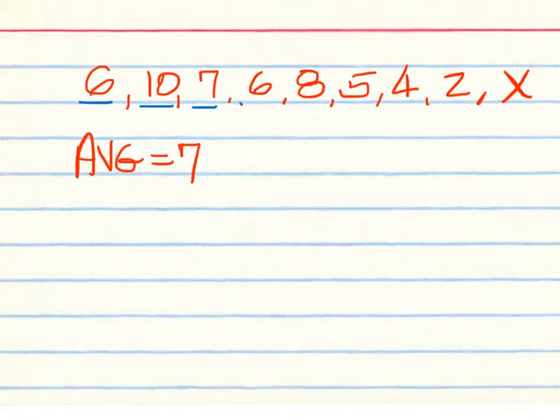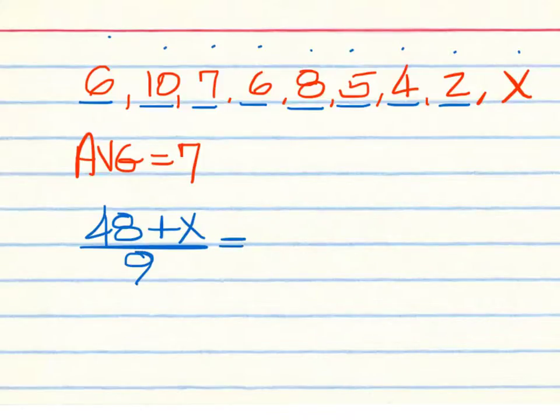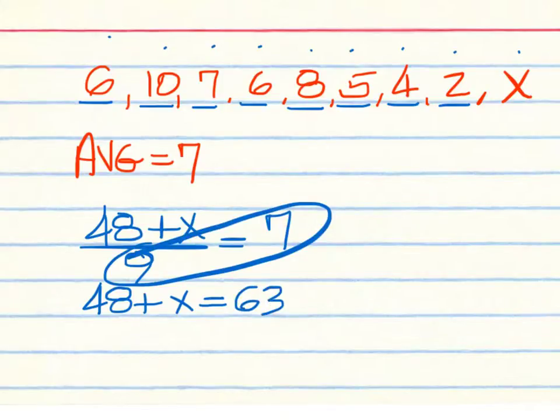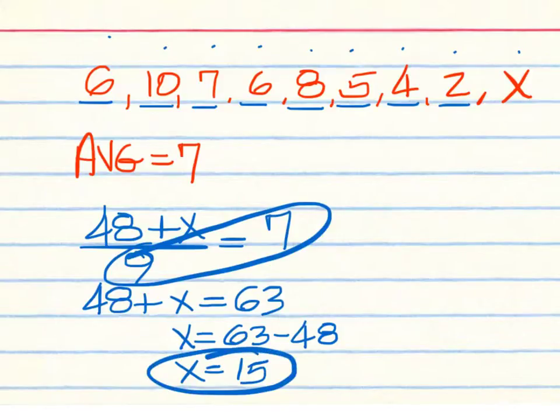6, 16, 23, 29, 37, 42, 46, 48. So we have 48, and then plus that X would give us our sum. We want to divide by the number of numbers we have. We have 1, 2, 3, 4, 5, 6, 7, 8, 9, including the X. And the average we want to get is 7. So we would have 48 plus X equals 7 times 9. That's 63. So 63 minus 48 would give us a 15. We would have to get 15 on that last one in order to get an average of 7.